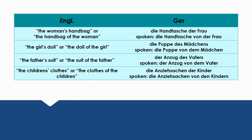Many of you might ask yourselves: 'Anziehsachen — I've never heard of that before.' This is actually very colloquial. If you want to say this in a more formal way, you would say 'die Kleidung der Kinder.' Another colloquial way of saying it would be 'die Klamotten der Kinder.'